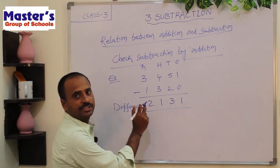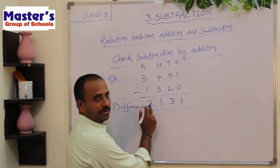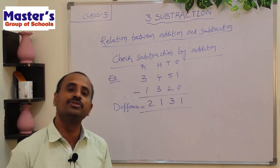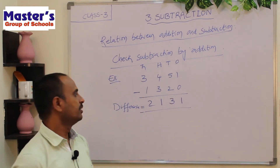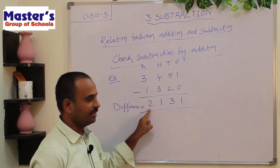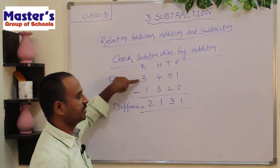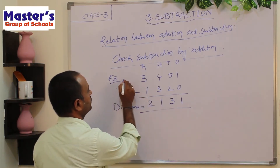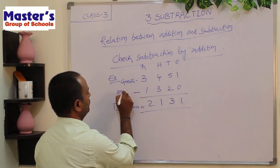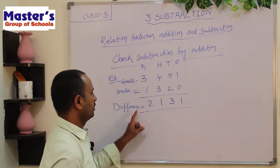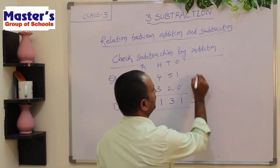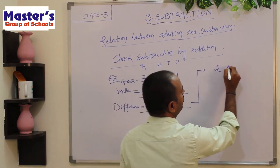Now we can check this subtraction by using addition. We have to write the difference first and add the smaller number to the difference. The difference is 2131.